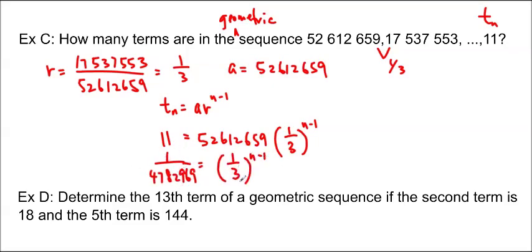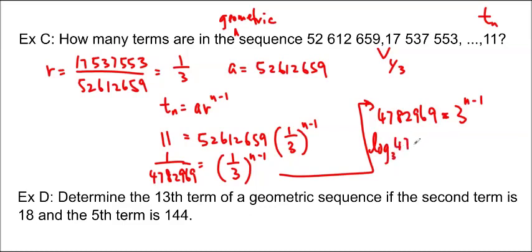Because these are both 1 over, I can actually just flip it over. So I'm going to get 4,782,969 equals 3 to the n minus 1. And now we could solve it. You can use guess and check, but we did teach you how to do logs. So if you like, you can use logs instead. This will be log base 3 of 4,782,969 equals n minus 1. If you don't have this little base, you can do log 4,782,969 divided by log 3. And that will give you a number, which is 14. So 14 equals n minus 1. So n equals 15. There are 15 terms in this sequence.